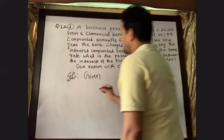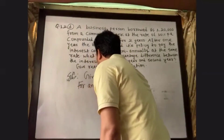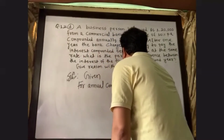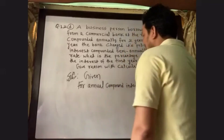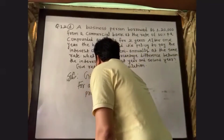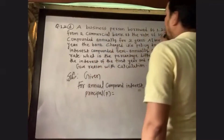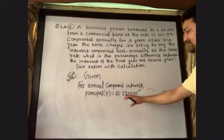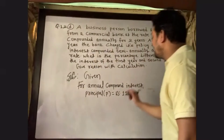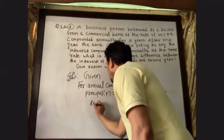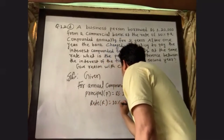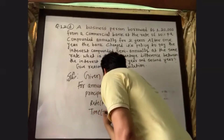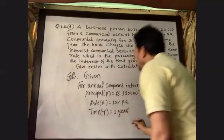Given, for annual compound interest: the principal P is equal to Rs 1,20,000. The rate R is equal to 10% per annum. The time T is equal to 1 year, because we calculate annual compound interest only for the first year.